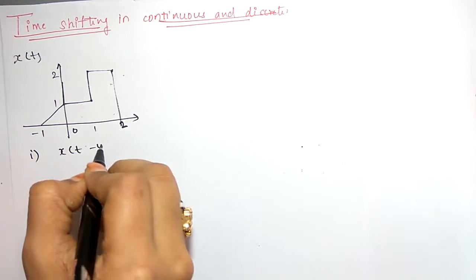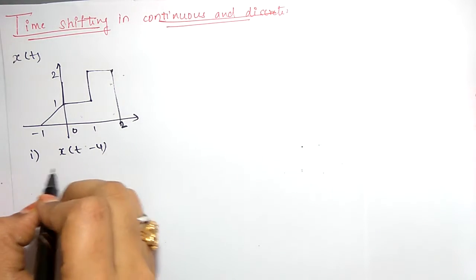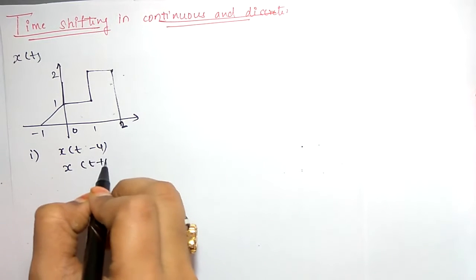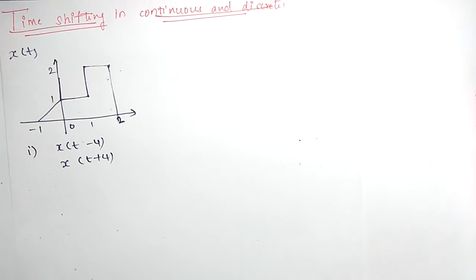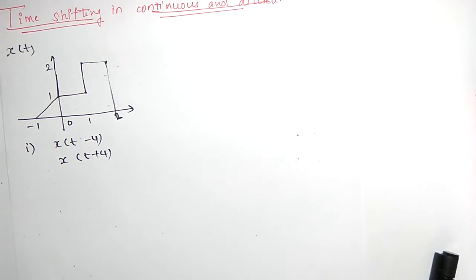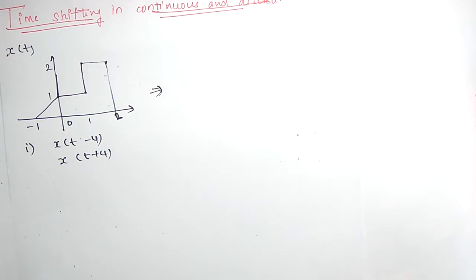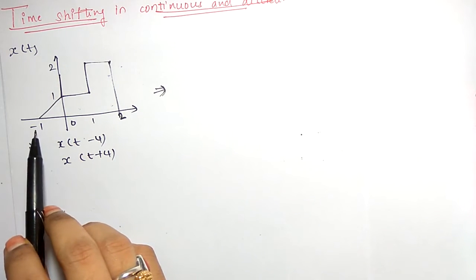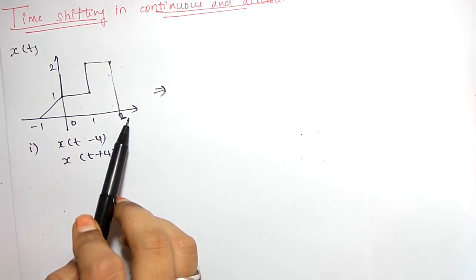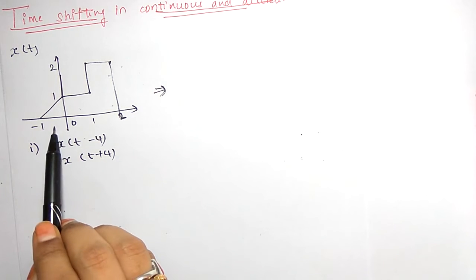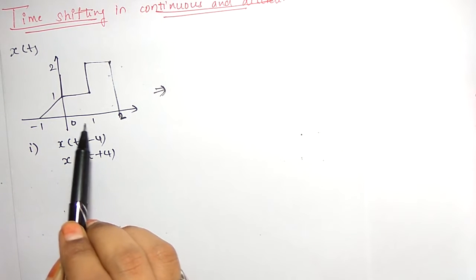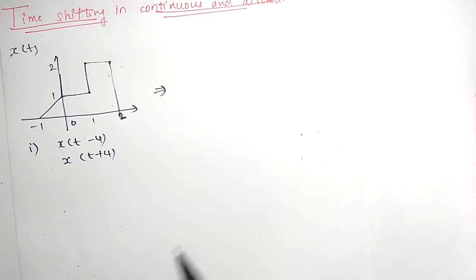Now I want to find X(t minus 4) and X(t plus 4) for this function. For X(t minus 4), we already know that t minus 4 means it will shift to the right by 4 units. Every point on the time scale will shift by 4: minus 1 plus 4, 0 plus 4, 1 plus 4, 2 plus 4, and so on.